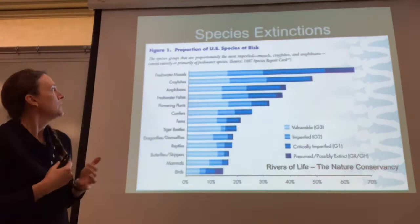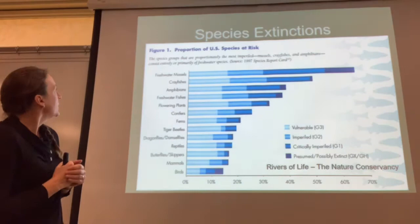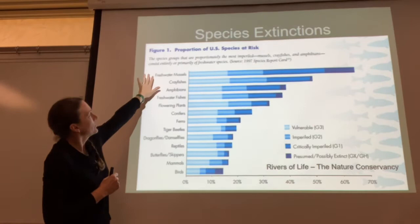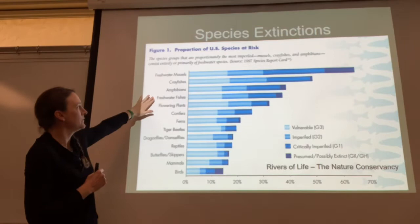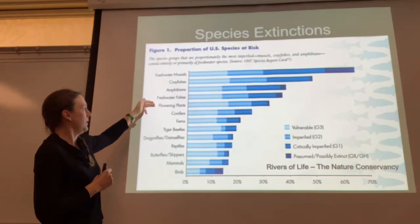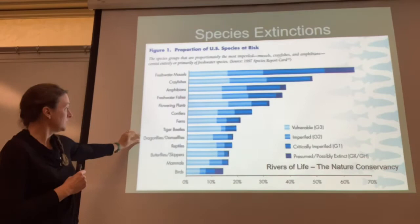Freshwater species are at a unique risk of extinction. Here you can see a figure from the Nature Conservancy showing the groups that are most imperiled. Freshwater mussels and crayfish, amphibians, and freshwater fish are all at the top of the list — above things like flowering plants, conifers, ferns, and beetles.